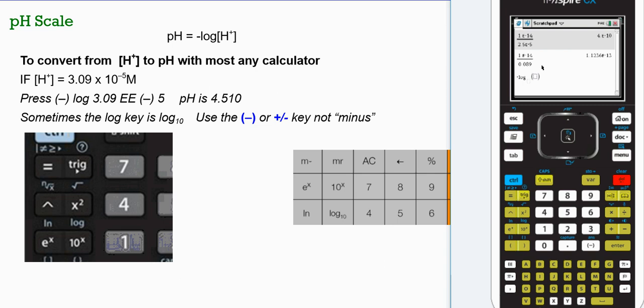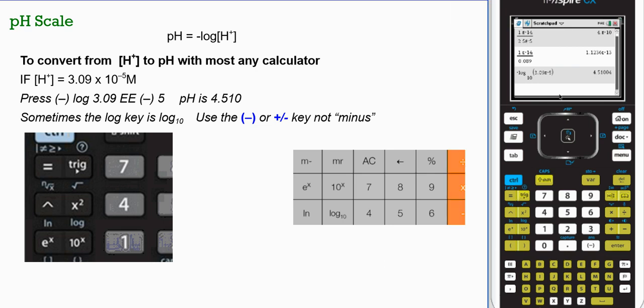And so 3.09 EE negative 5. There's my hydrogen ion concentration. That's going to give me a pH of 4.51004, shortened to 4.510. Keep in mind when you're doing this to tinker with your calculator to make sure your numbers make sense.